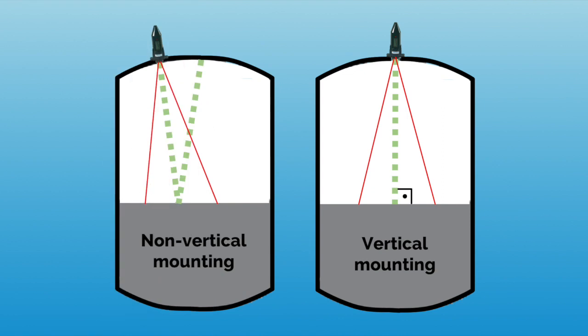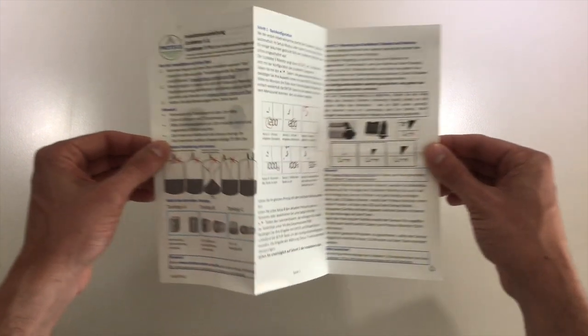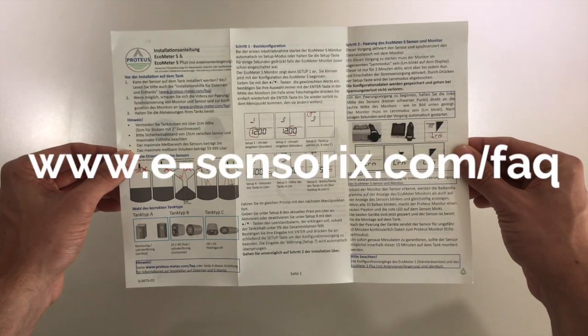Finally, ensure that the sensor is vertically mounted with an alignment perpendicular to the liquid interface. If you're still having problems with the correct installation, make sure to check the installation guide and visit our FAQ on esensorics.com.